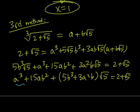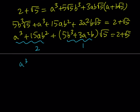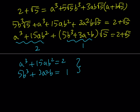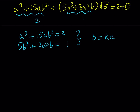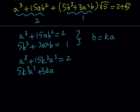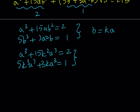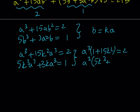At this point, you can say that a³ + 15ab² needs to equal 2 if there are rational solutions, and 5b³ + 3a²b needs to equal 1 because I have 1·√5 on the right hand side. This gives me a nice system to solve. This is like a homogeneous equation — therefore, replacing b with ka is going to work, because all terms are cubic: a³, ab², b³, and a²b. So substituting gives a³(1 + 15k²) = 2 and a³(5k³ + 3k) = 1.